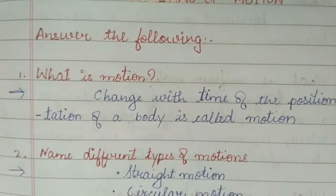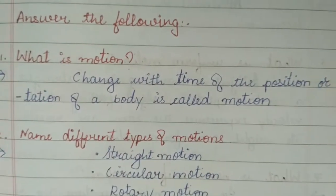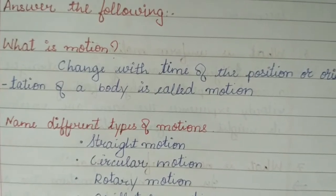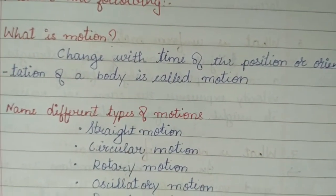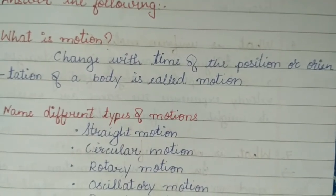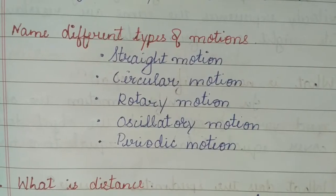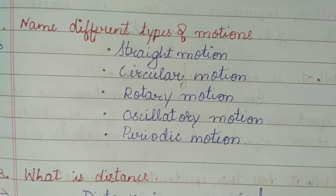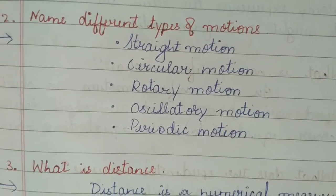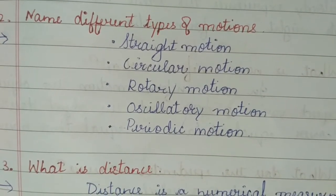Laws of motion: answer the following. What is motion? Answer: change with time of the position or orientation of a body is called motion. Name different types of motions: straight motion, circular motion, rotary motion, oscillatory motion, periodic motion.